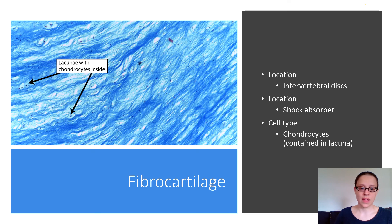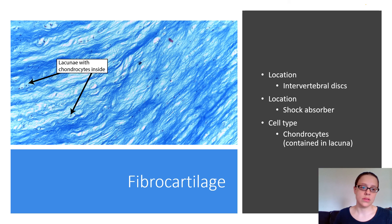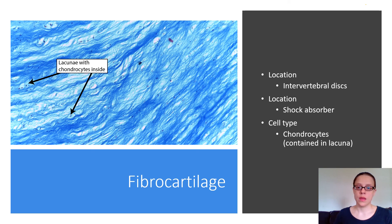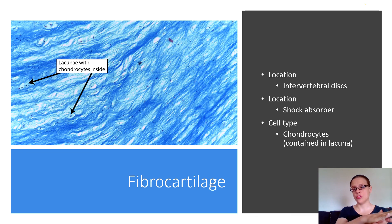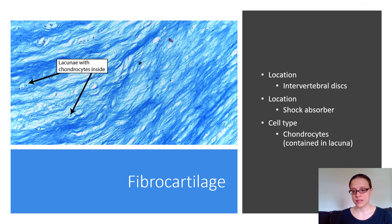The last type of cartilage is fibrocartilage. You can already see the lacuna with chondrocytes labeled. You can tell why it's called fibrocartilage because there's a much higher predominance of fibers — many more fibers than there are lacuna. You find this located in between your vertebrae as intervertebral discs, and it acts as a shock absorber, which is also why you find it in the meniscus between your knees.